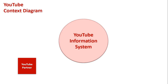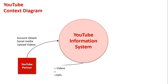Firstly we have a YouTube partner, which I perceive as someone who makes money off their YouTube videos. They put in their account details into the system, they can use the social media elements to like, share and subscribe to videos, and they can upload videos. In return they can view and stream videos already on YouTube, they can see replies to their videos through social media, and they also receive payment receipts from their uploaded videos which have been monetized, showing that they got paid from YouTube.